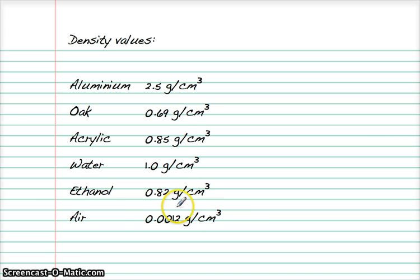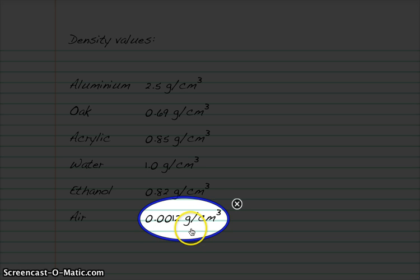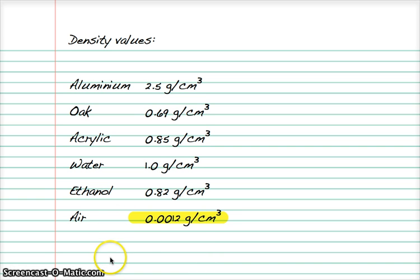Now this last one seems like a bit of an odd one out. Look at all the other values — they're in the order of one, just less than one, just more than one, not a great deal of difference whether liquid or solid. But air is very different — much lower — a thousand times smaller than water's density. This fact tells us a lot about how the particles are arranged in solids, liquids, and gases.